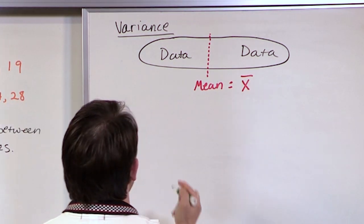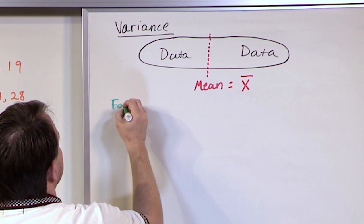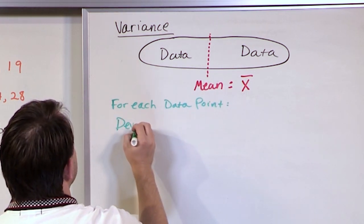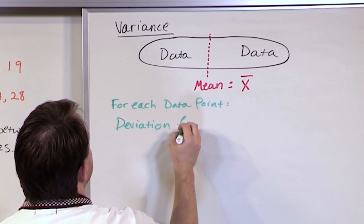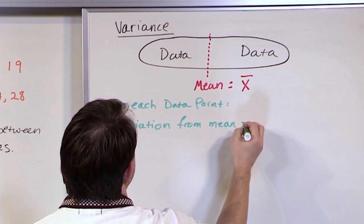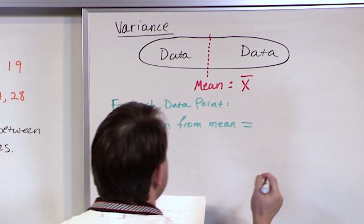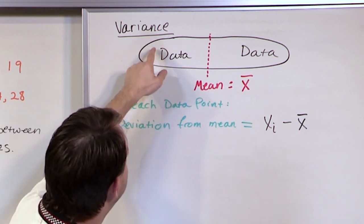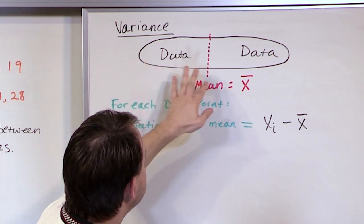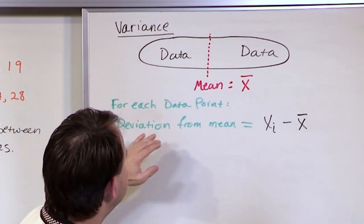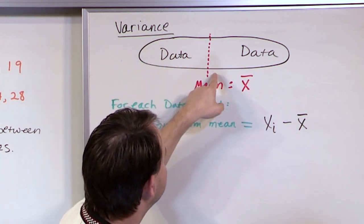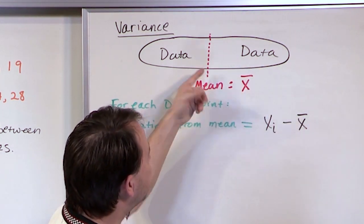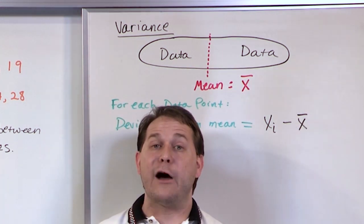For each data point, the deviation from the mean is very simple: data value minus the mean. If I have a data point of 1 and the mean is 5, I subtract them — I take my data point and subtract away the mean. If I've got a data point of 7 and the mean is 5, I take 7 minus 5, and that tells me how far away that point is.